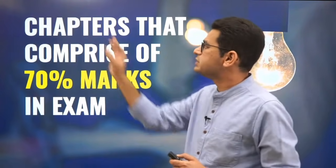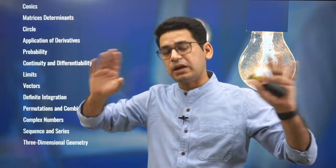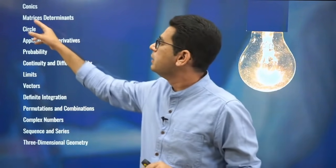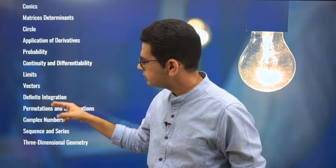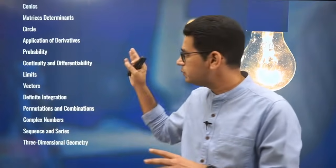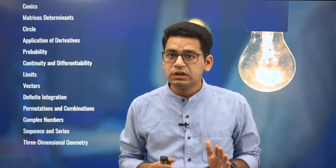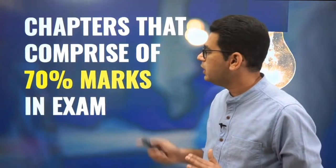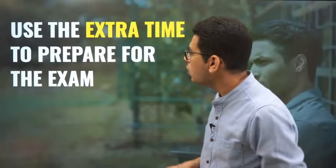If you add vectors and 3D — questions from which are not very difficult — you can be sure of a good score and qualify JEE Advanced, even if you scored around 95 percentile in JEE Mains but prepared for JEE Advanced over 2.5 years. The chapters that comprise 70% of marks in the maths exam include: conics (ellipse, hyperbola, parabola), matrices and determinants, circle, application of derivatives, probability, continuity and differentiability, limits, vectors, definite integration, permutation and combination, complex numbers, sequence and series, and 3D geometry. Narrow down, think positively, and you will be able to clear the exam.